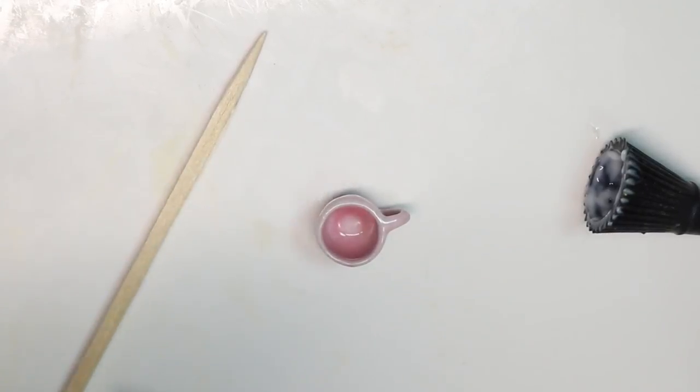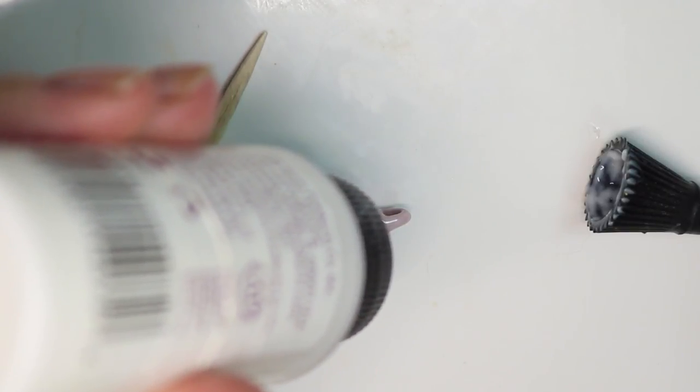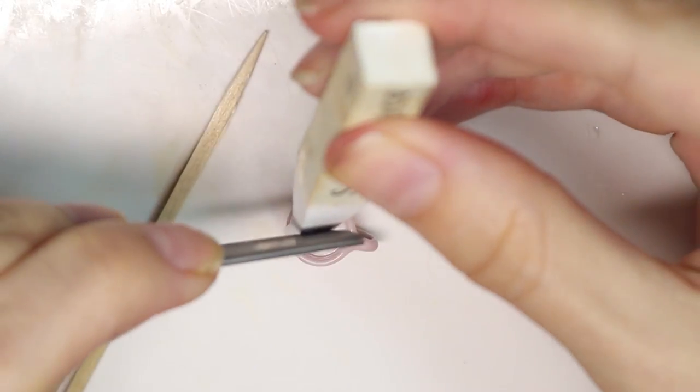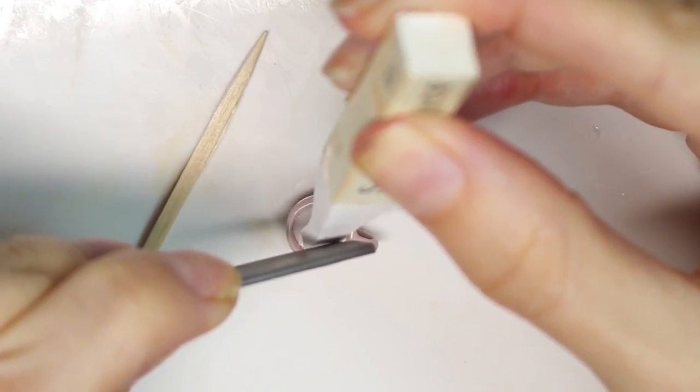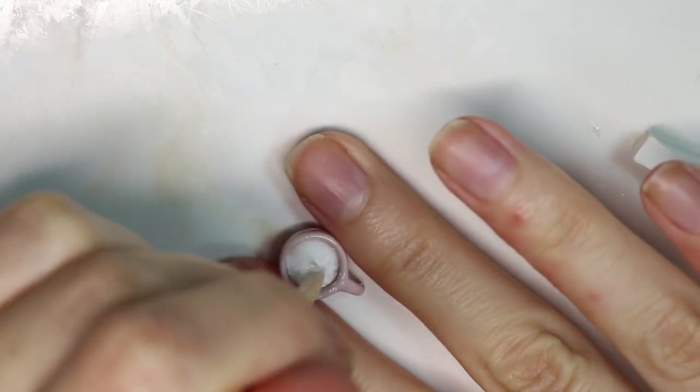So first we're going to be taking our liquid Sculpey and we're going to be adding a generous amount inside our little teacup. After that, you're going to be taking some soft pastel. I am, since I'm making white hot chocolate, I'm taking white and I'm going to be adding a decent amount inside this. Because even though this looks white, it actually will dry more translucent. So we need to add some pigment to it or else you won't have any color.